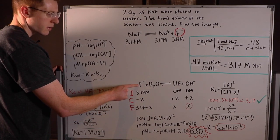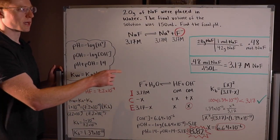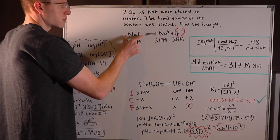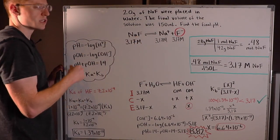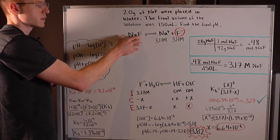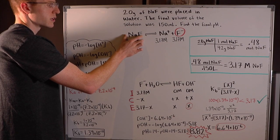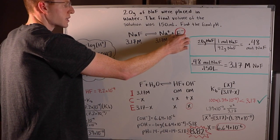So to get the initial amount of F-, I actually had to do some calculations up here in these green boxes. So I'd like to make sure you understand that NAF is a soluble salt. What that means is that any amount of NAF we start out with is going to end up as Na+ and F-.